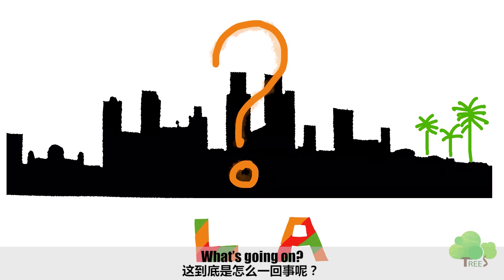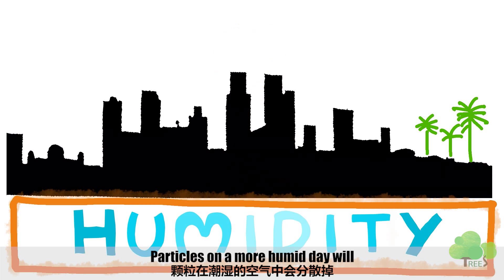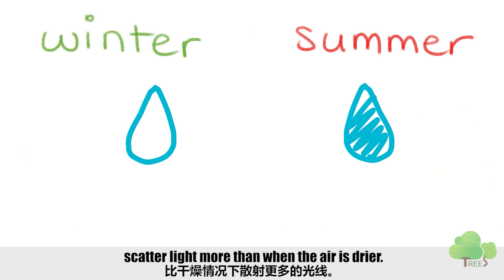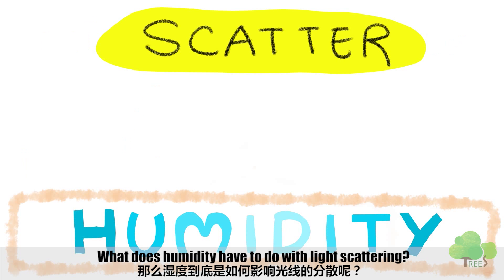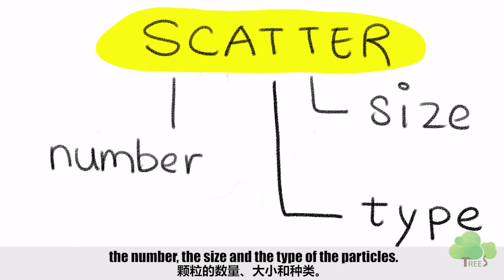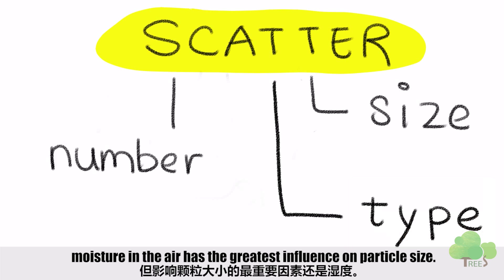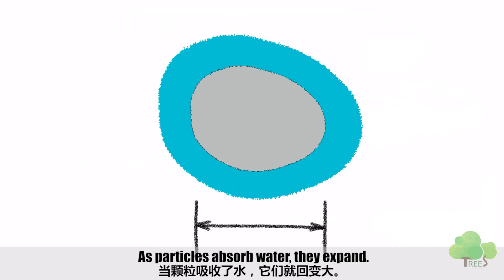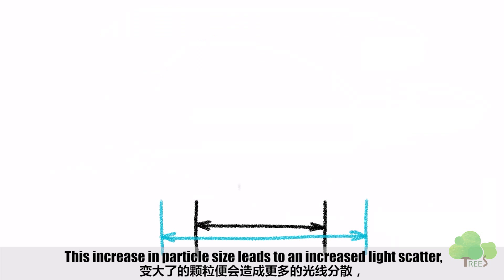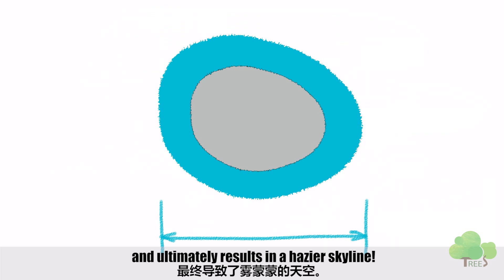What's going on? The large difference in visibility here is mostly due to the changes in humidity. Particles on a more humid day will scatter light more than when the air is drier. What does humidity have to do with light scattering? Well, remember that the amount of scatter depends on the number, the size, and the type of particles. While water vapor can also affect particle type, moisture in the air has the greatest influence on particle size. As particles absorb water, they expand. This increase in particle size leads to increased light scatter and ultimately results in a hazier skyline.